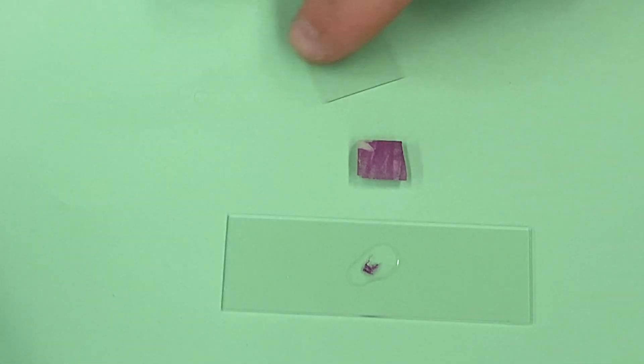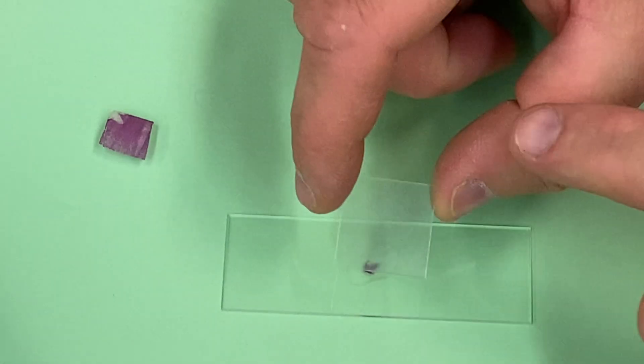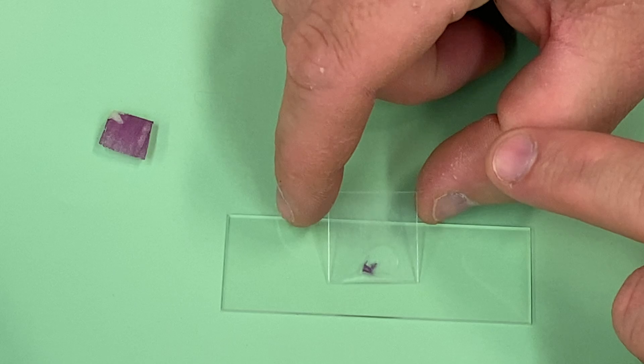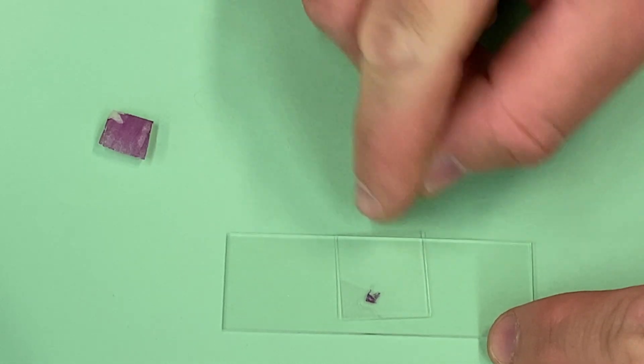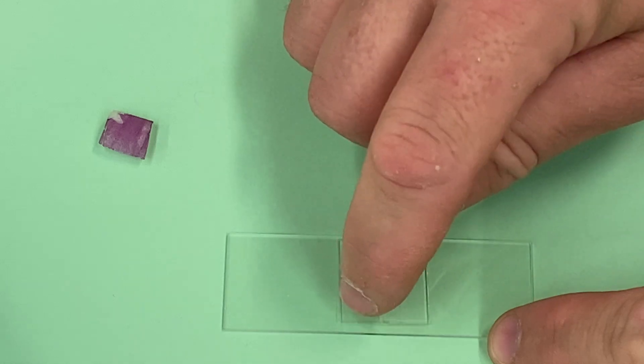And then a cover slip. Now the cover slip is going to protect the objectives of your microscope and also it kind of helps when you're doing the other portion of this lab, which is putting the salt water on.